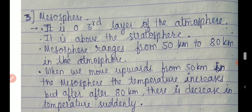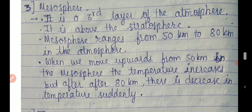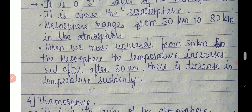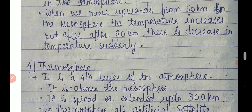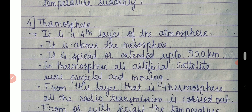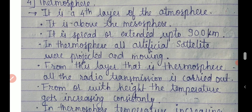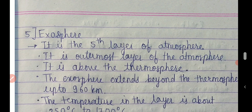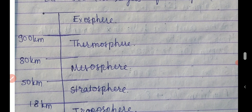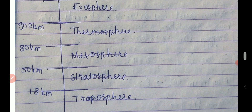To summarize: mesosphere is the third layer, above stratosphere, 50-80 km range, temperature increases then decreases after 80 km. Thermosphere is the fourth layer — all artificial satellites and radio transmissions are carried out here. Exosphere is the fifth layer, lighter gases like hydrogen and helium are found here, and temperature is about 250 to 700 degrees Celsius.